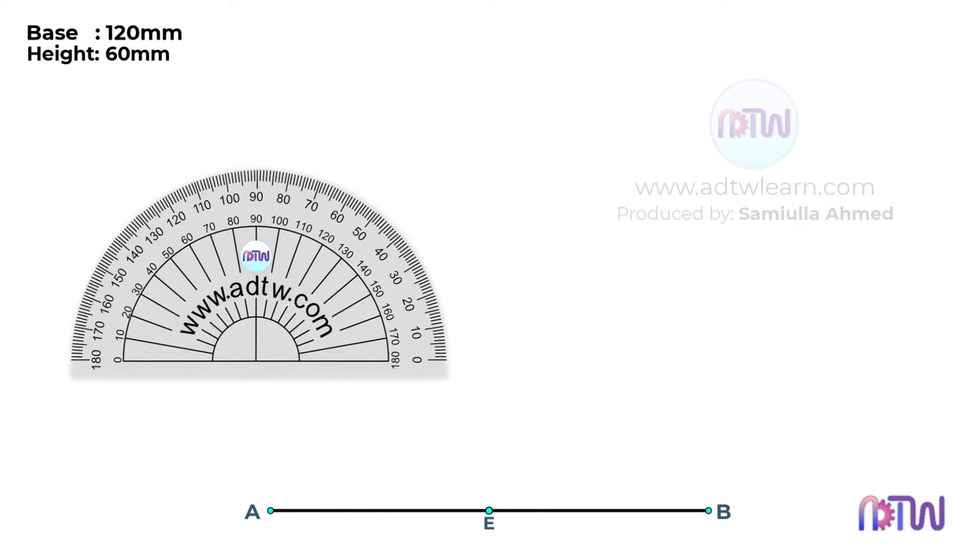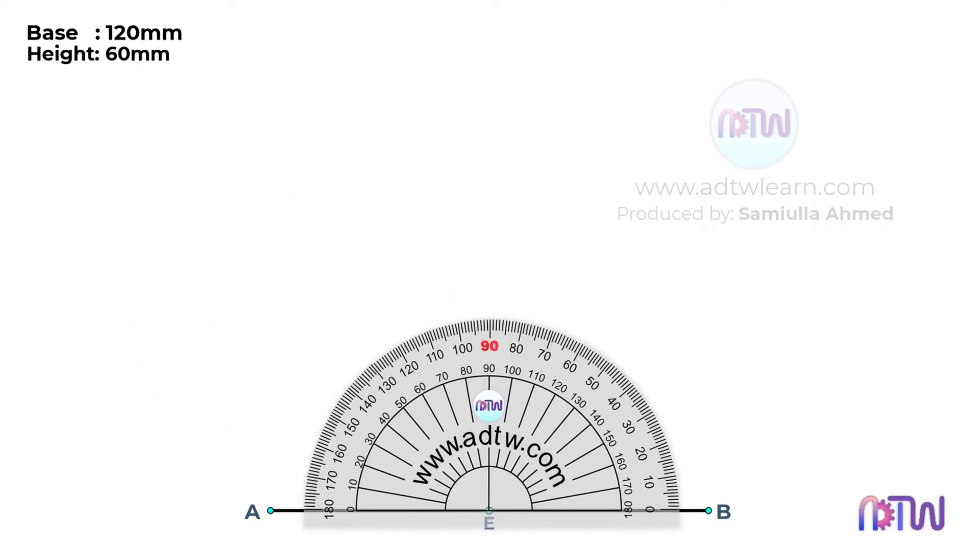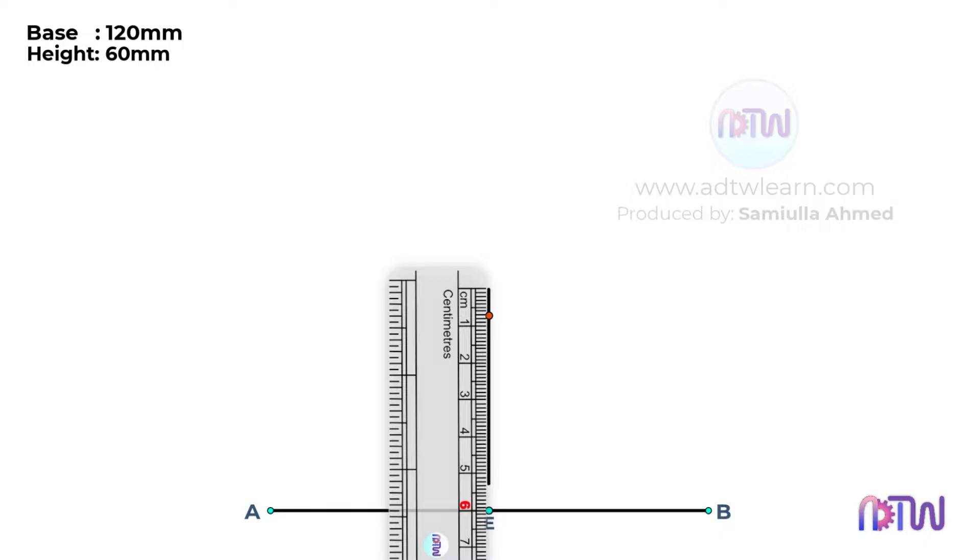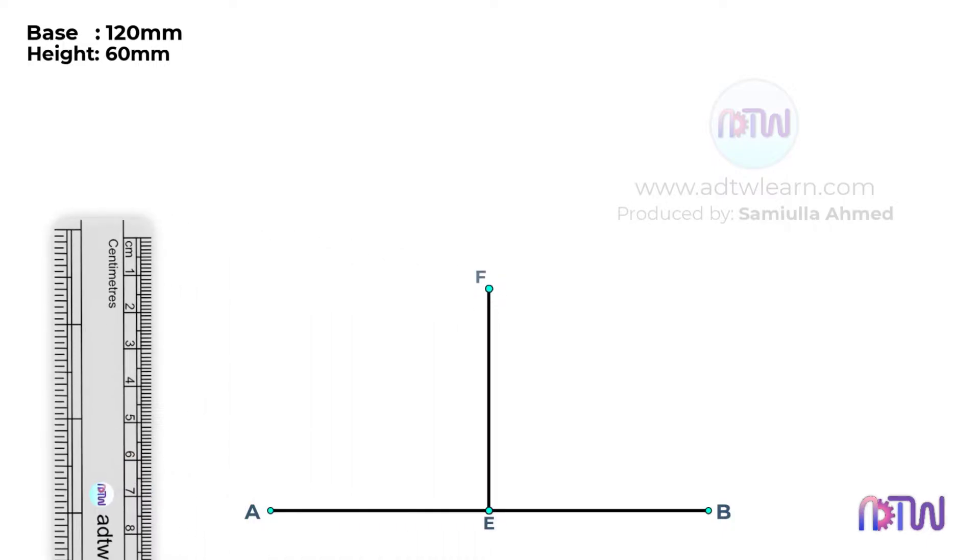Take a protractor, keep it at this point E, and mark a point at 90 degrees. Using this point as a reference, draw a line of 60mm in length from point E. Label this point as F. The length EF is the height of the parabola.